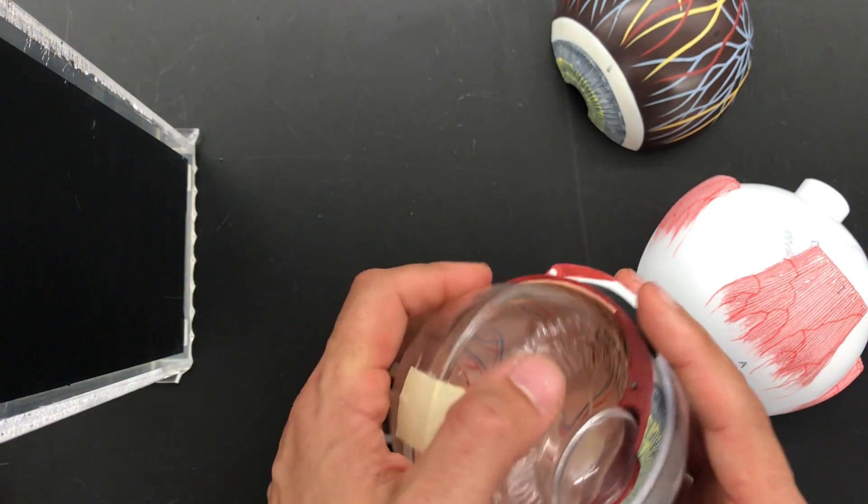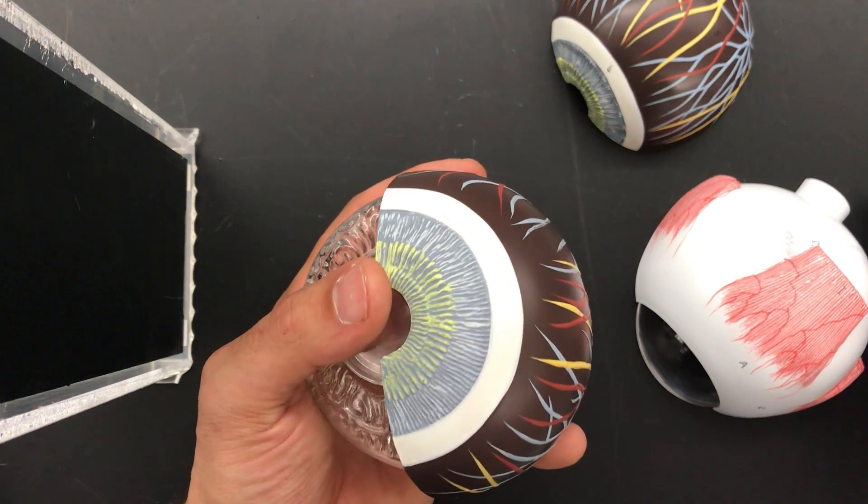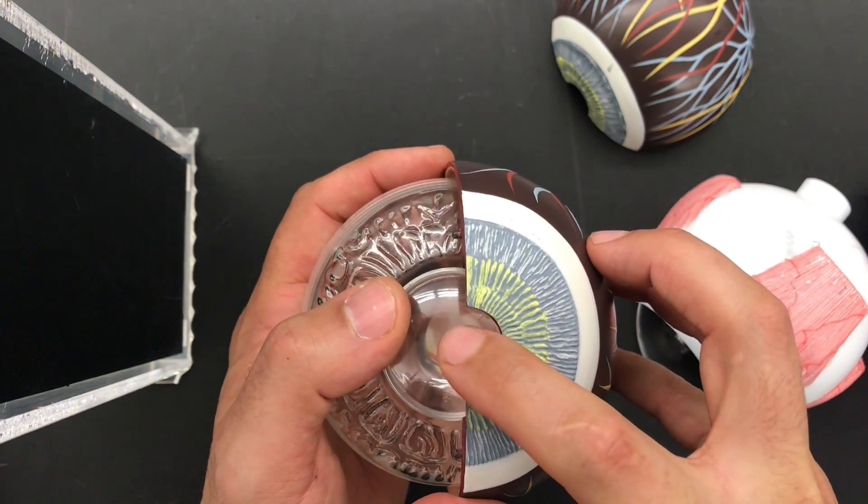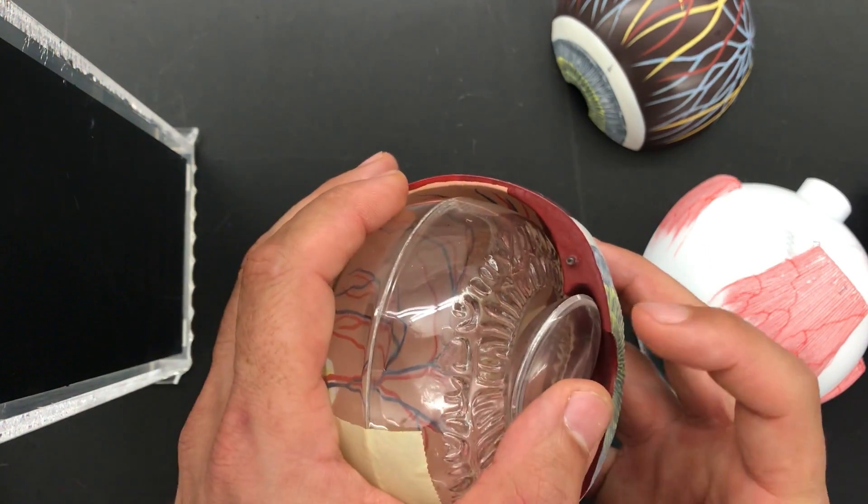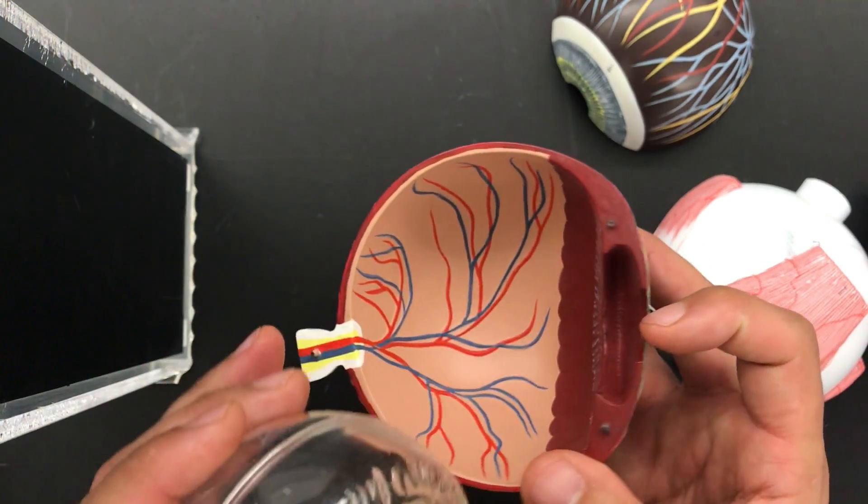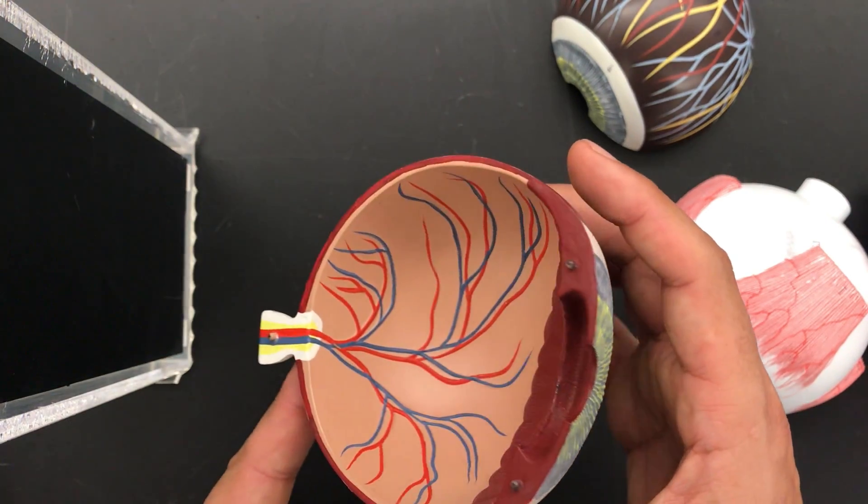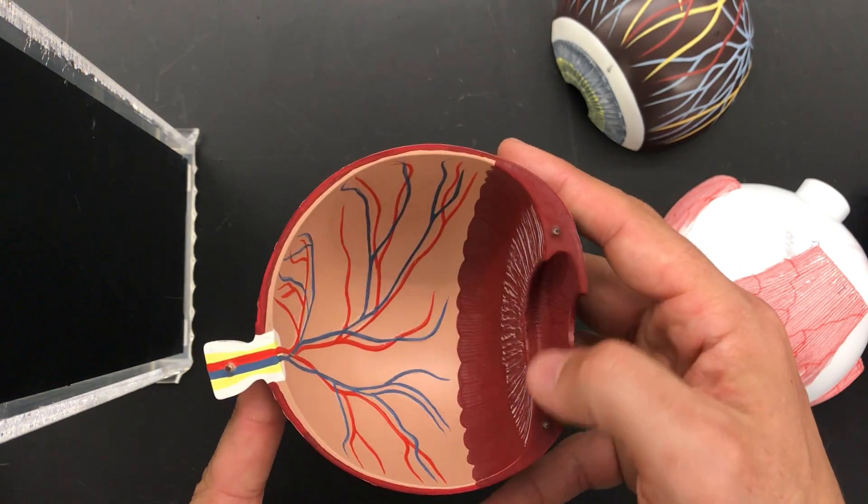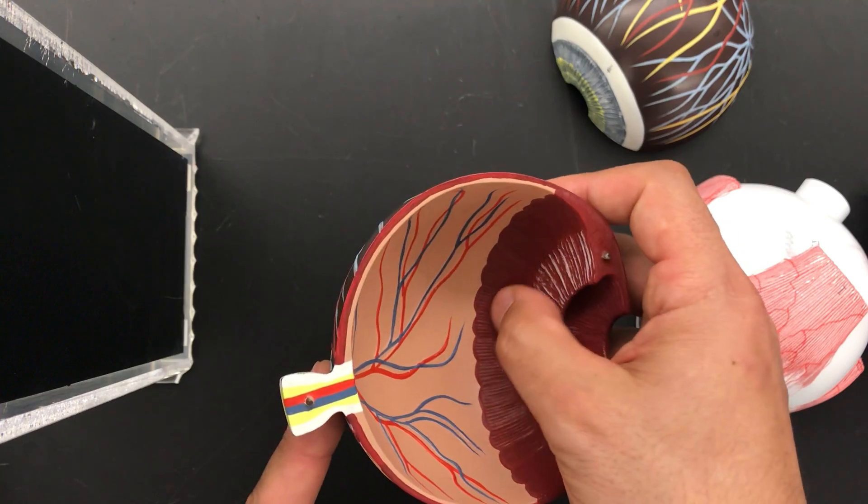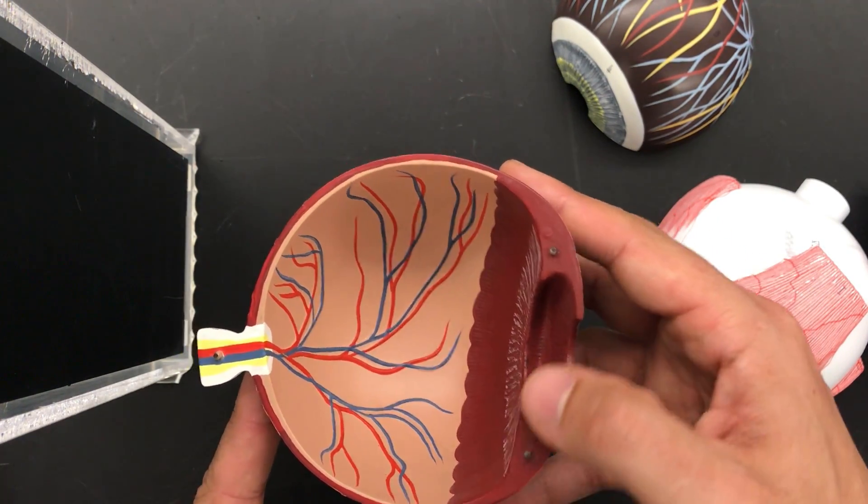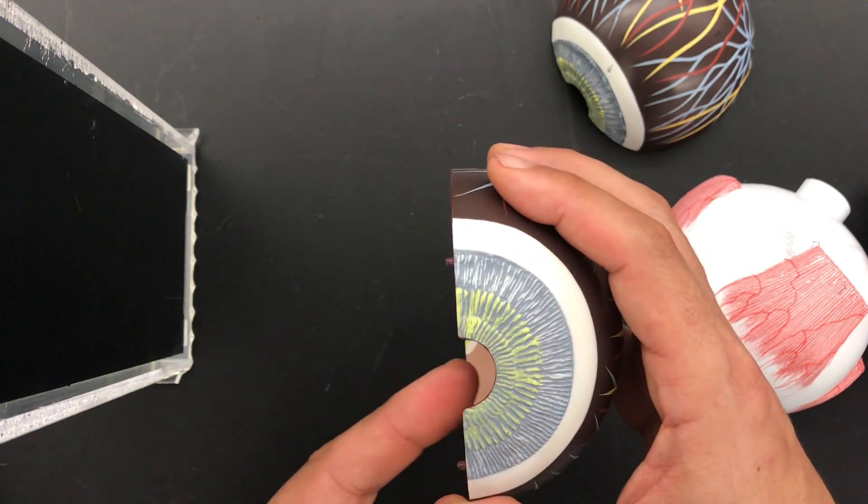The size of the pupil is controlled by a muscle. You can't see it with an anterior view, but if you do this, all this red here is the ciliary body. This is the ciliary body - the muscle that controls the diameter of the pupil.